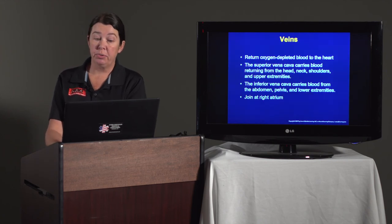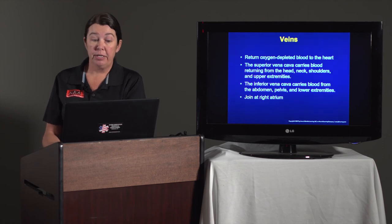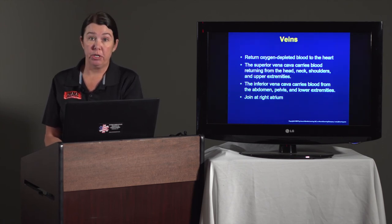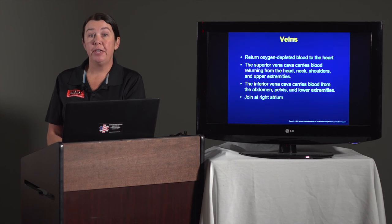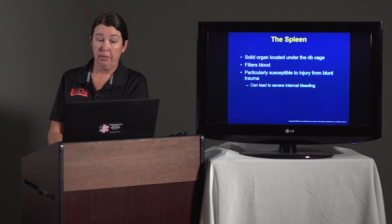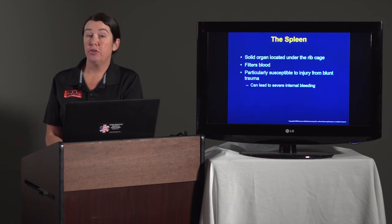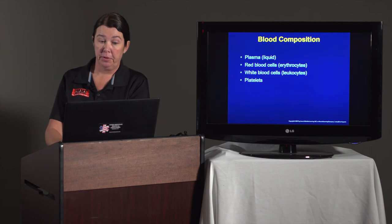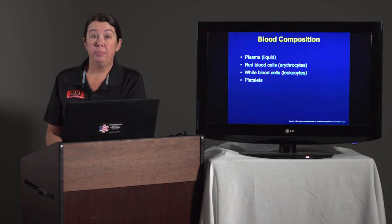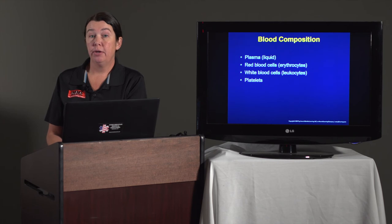Veins return oxygen-depleted blood back to the heart. The superior vena cava brings blood returning from the head, shoulders, neck, and upper extremities. The inferior vena cava brings blood from the belly, pelvis, and lower extremities, and they join at the right atrium. The spleen is a solid organ located under the rib cage. It filters blood and is particularly susceptible to injury from blunt trauma, which can lead to severe internal bleeding. Blood is made of four parts: plasma, red blood cells, white blood cells, and platelets. Plasma is the liquid portion. Red blood cells carry oxygen, white blood cells fight infection, and platelets are used for clotting.